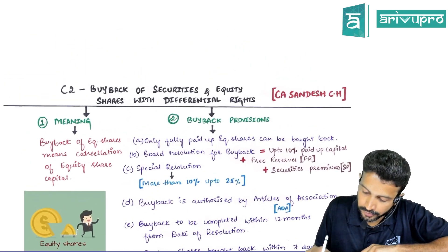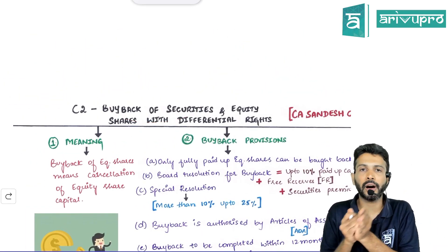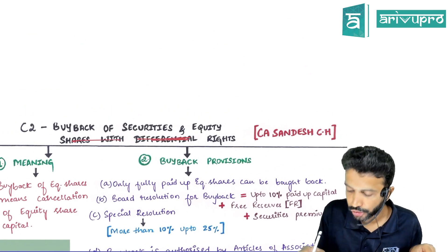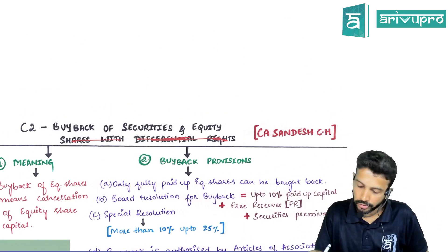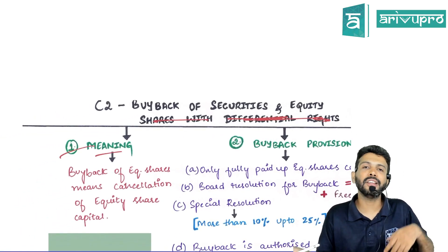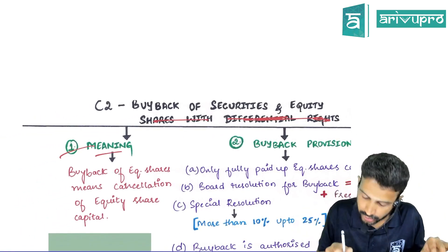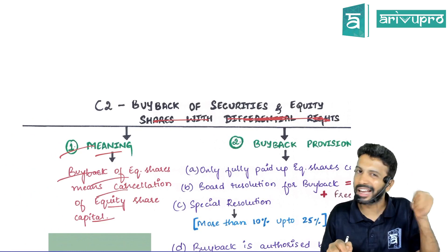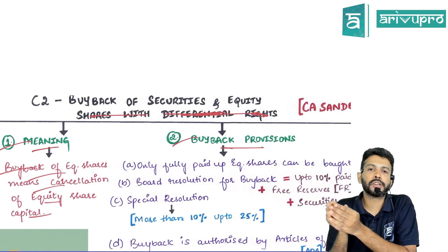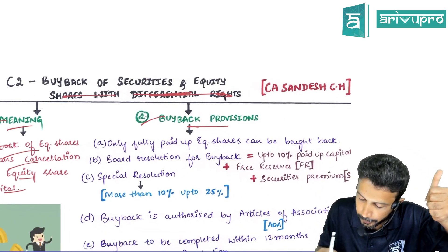Let's quickly revise buyback of equity shares with the help of our chart book. Shares with differential rights are not required right now, so you can cut that off. Buyback means the company is cancelling equity shares — so it simply means cancellation.